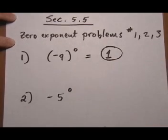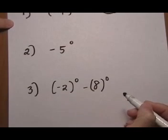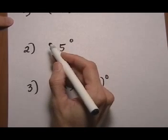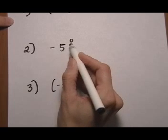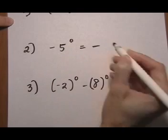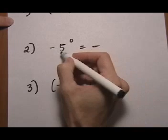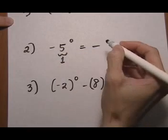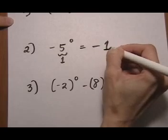On number 2 we have minus 5 to the zero. There's no parentheses telling us that the minus sign gets the zero, so only the 5 gets the zero. That means that the minus sign just tags along, nothing happens to it. And then the 5 to the zero is a 1, so our final answer is minus 1.